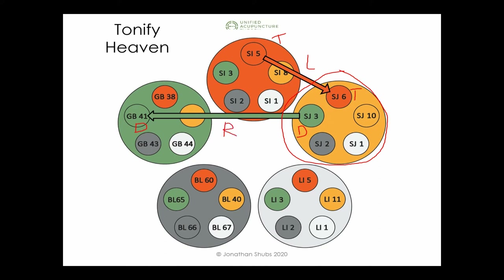The treatment is: tonify Small Intestine 5 and San Jiao 6, disperse San Jiao 3 and Gallbladder 41. This is a really good treatment for people who feel stuck — like writer's block. It's important to include this because when people need to come back to equilibrium, one of the first things they forget is their creativity. That's often the first sign a person is starting to fall — they lose creativity first, then grounding, then they start reacting to all the other emotions.